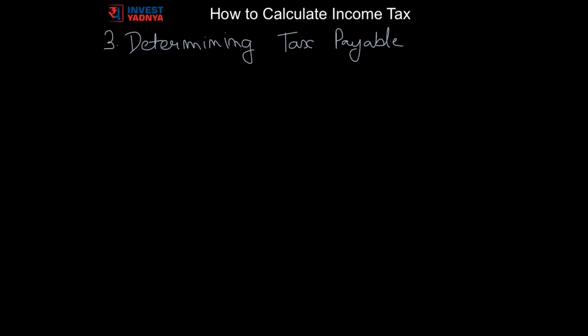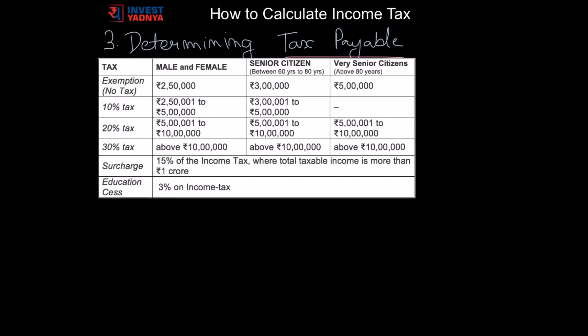Now once we have the final taxable income, next step is to determine the tax payable based on tax slab. First is to identify the relevant tax slab for calculations. So if your income calculations are for the year 2016-17, that is 1st April 2016 to 31st March 2017, then we need to take tax slab relevant for same financial year. Following is the 2016-17 financial year tax slab and we will calculate the income tax of Sunil based on this.